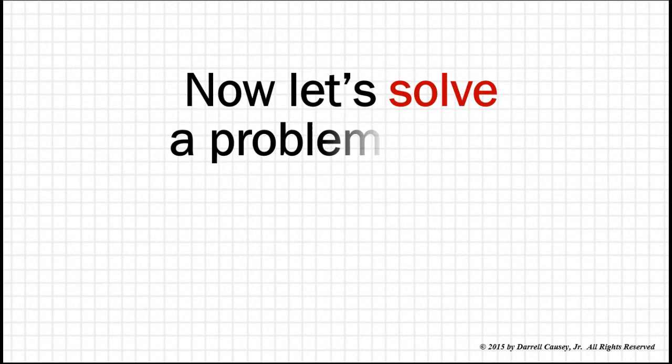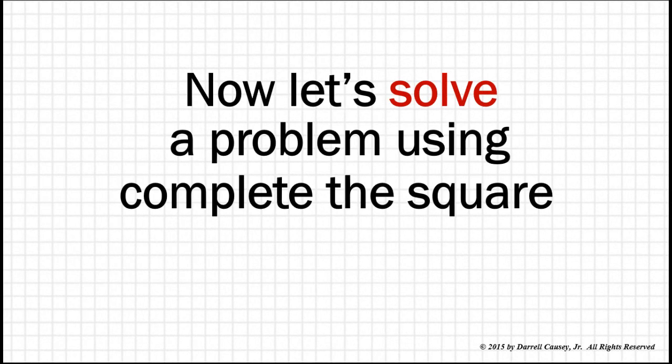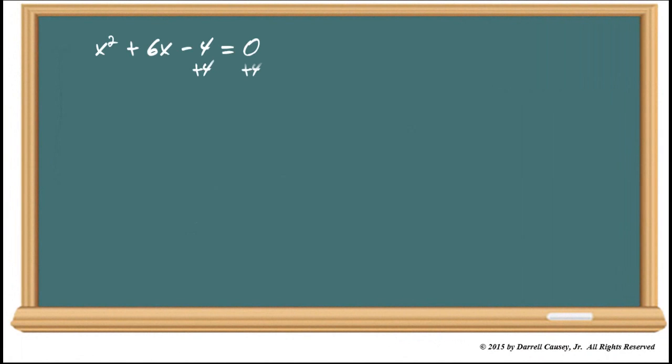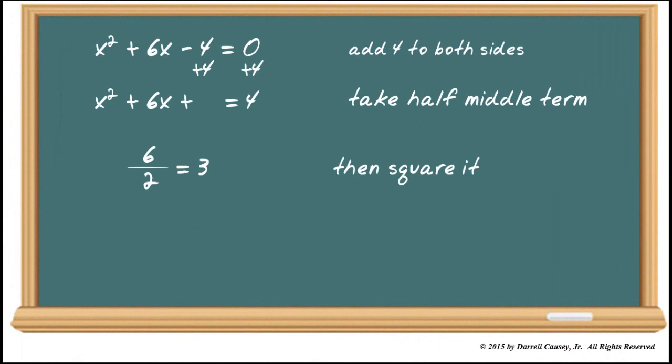Now, let's solve a problem using complete the square. Solve the following by completing the square. X squared plus 6X minus 4 equals 0. First thing I want to do is go to my blackboard and add 4 to both sides. Now, let's rewrite it and take the middle term, take half of it, and then square, and get 9. So now let's add 9 to both sides.